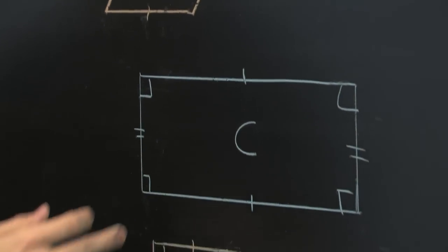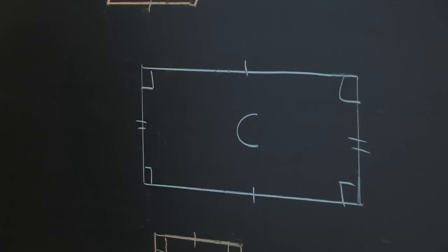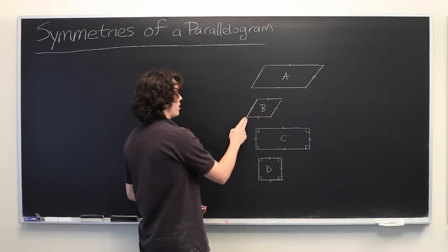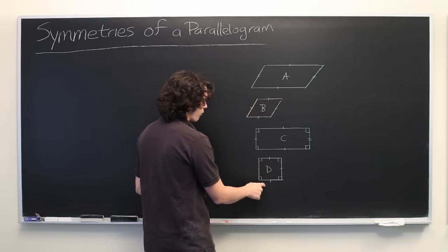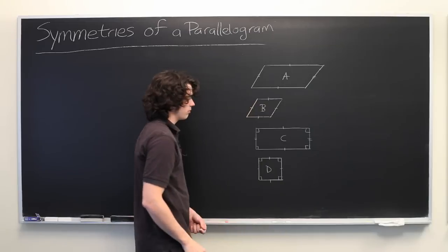C is a parallelogram in which all four of the interior angles are 90 degrees, a rectangle. And D is a parallelogram that combines the properties of B and C. All four sides are the same length, all interior angles are 90 degrees, a square.